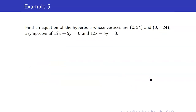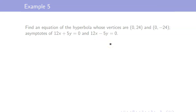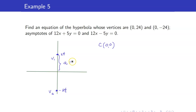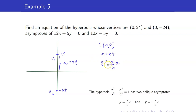For our last example, let us find the equation of the hyperbola whose vertices are (0, 24) and (0, -24), and the asymptotes are 12x plus 5y equals 0 and 12x minus 5y equals 0. Our vertices are (0, 24) and (0, -24), which means that our center is the origin. We get that our a is equal to 24. We are also given the asymptotes of our hyperbola.